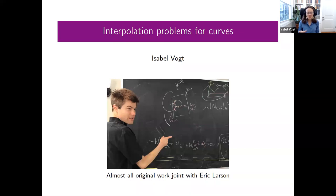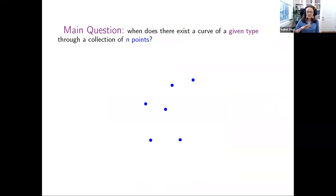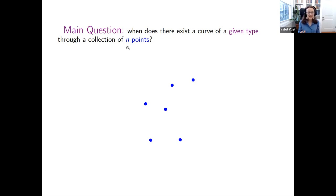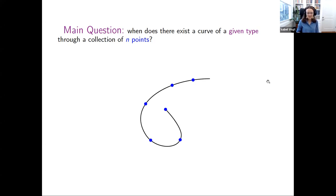I'm going to be talking about interpolation problems for curves. Here is the interpolation problem in its most general form: suppose I fix some collection of n points in some space — we'll make this more precise later. When does there exist a curve of some given type through this collection of points? I want to emphasize that this is exact interpolation — it's not statistical. I actually want to find a curve that passes through all these points; it's not a curve of best fit.